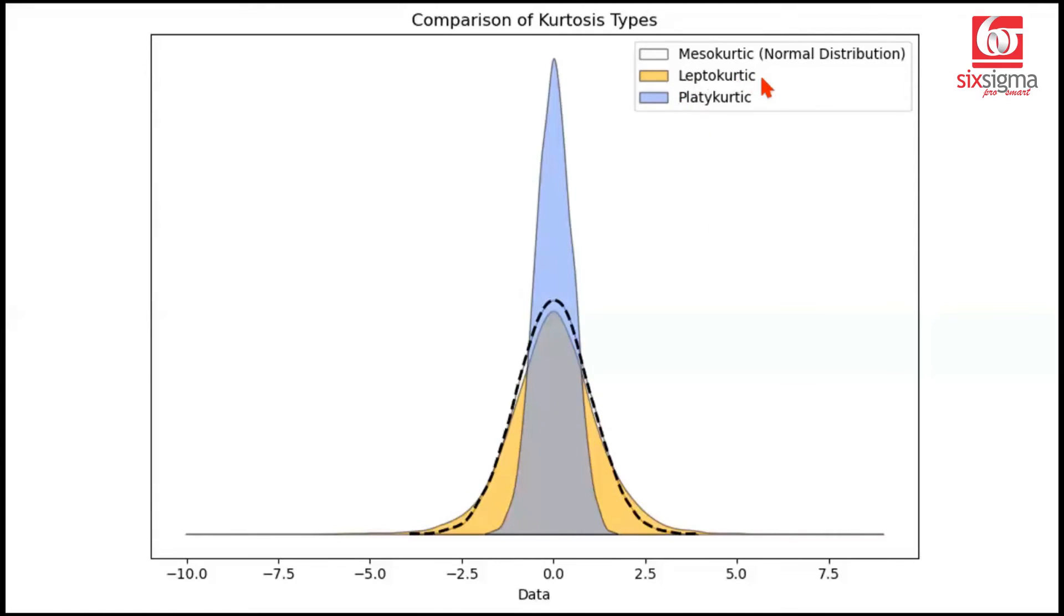When it has heavier tails, it is called a leptokurtic distribution. When its tails are thinner compared to a normal distribution, just as you can see in case of this blue distribution, just because of the overlap, you're getting a shade of gray here. Otherwise, you can imagine this entire outline from here to here is representing another type of kurtosis, which is known as the platykurtic, which has thinner tails.